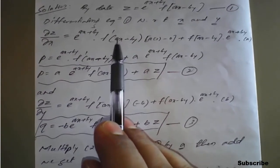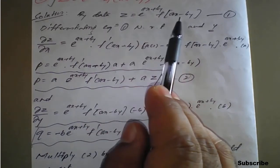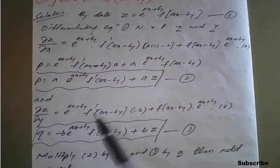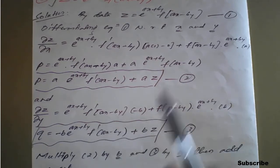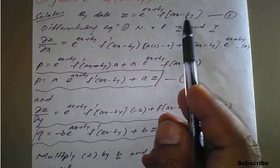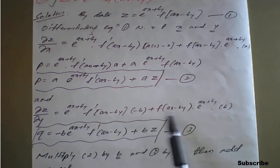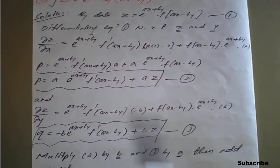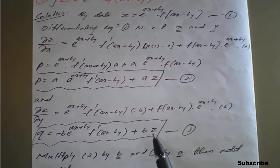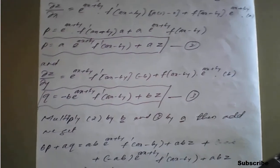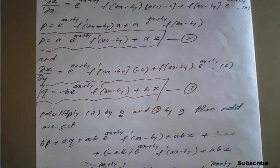Similarly, differentiate z with respect to y partially. Keep the first term as it is; the second is f dash of (ax minus by) into the partial derivative of (ax minus by) with respect to y, which is minus b, plus f of (ax minus by) times b times e raised to (ax + by) from the second product rule. On simplification, using equation number one, the e raised to (ax + by) times f of (ax minus by) part becomes z. Denote dou z by dou y as q; call this equation number three.